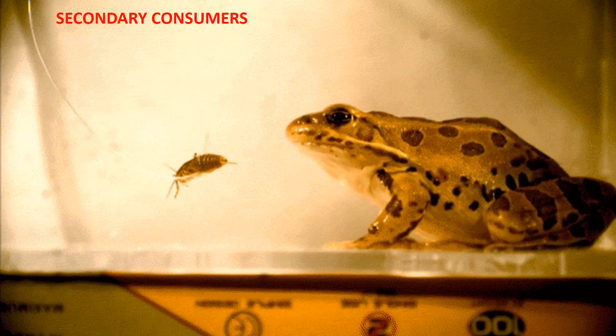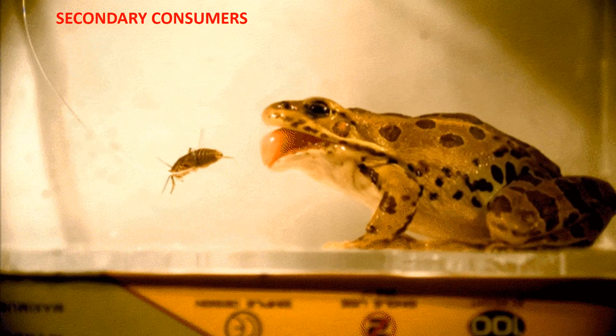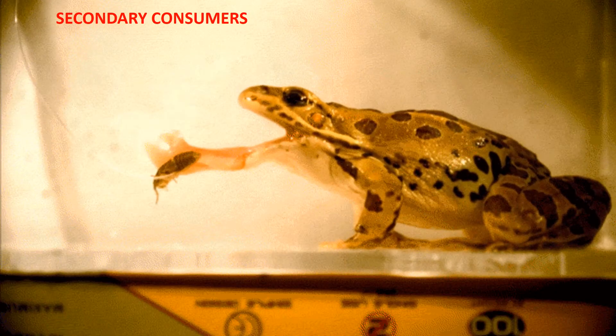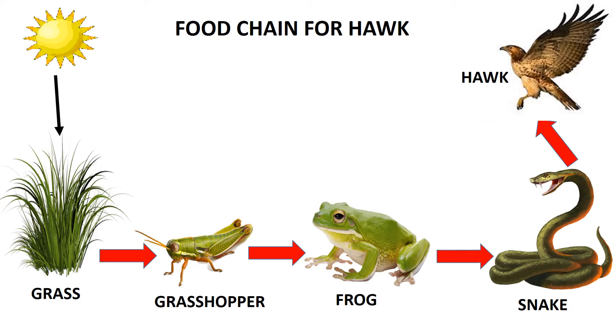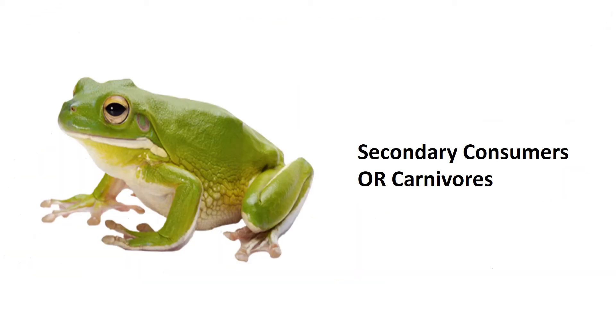Animals that eat primary consumers are called secondary consumers or carnivores. In this example, the frog is called the secondary consumer.